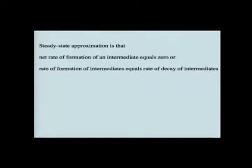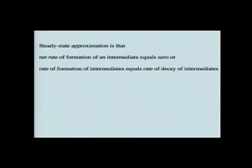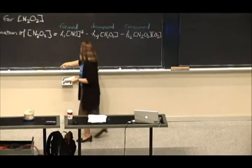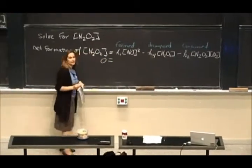is used in all sorts of kinetics, including enzyme kinetics, and it can be phrased two different ways, which are equivalent. You can say that the steady state approximation is that the net formation of the intermediate equals zero, i.e., this is the net formation of the intermediate, so this entire equation equals zero.